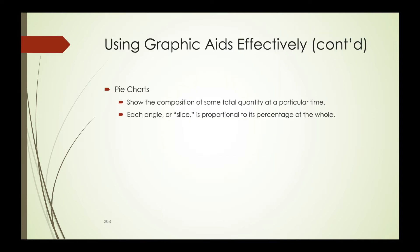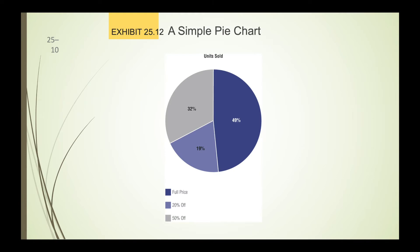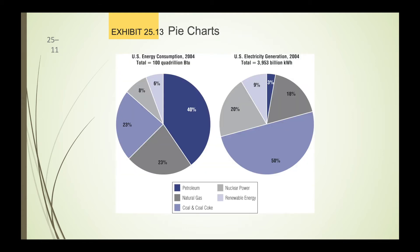Pie charts show the composition of some total quantity at a particular time, and each angle or slice is proportionate to the percentage of the whole. Looking at a simple pie chart of units sold, the dark blue is 49% at full price, 19% at 20% off, and 32% at 50% off. You can also use comparisons — U.S. energy consumption in 2004 versus U.S. electric generation in 2004 — where the different slices show percentages, and of course the larger the slice, the greater the percentage.